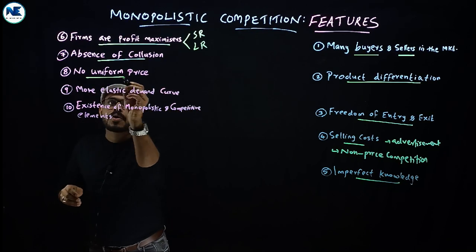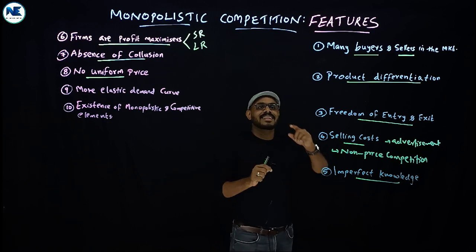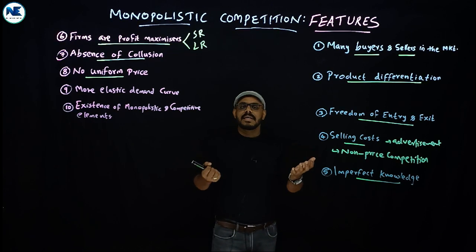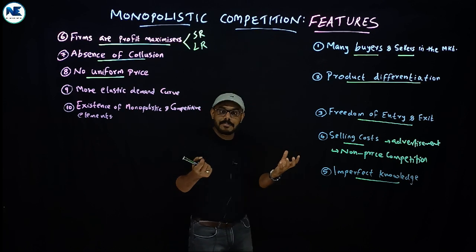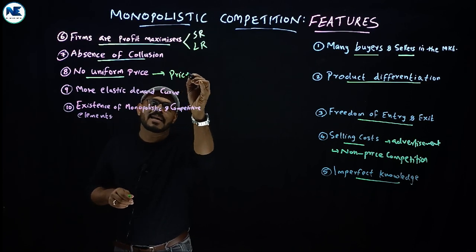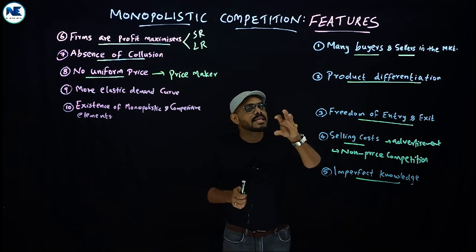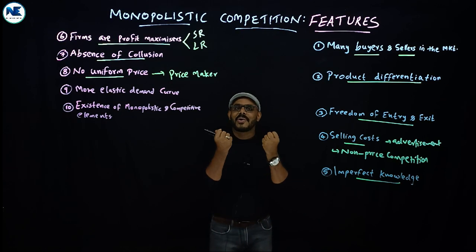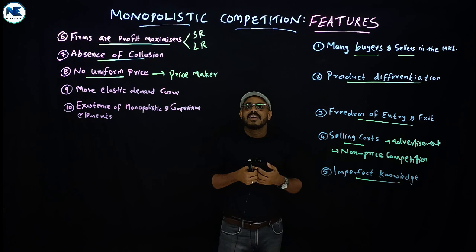The ninth point is no uniform price. In perfect competition, there is a homogeneous price. But in monopolistic competition, there is no uniform price because each firm has some form of monopoly power due to product differentiation. Each firm is a price maker to some extent — not a hundred percent price maker nor a hundred percent price taker — and influences its own price through brand, design, and quality.